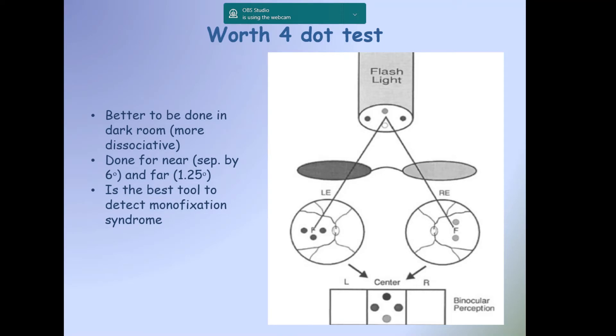Worth's four-dot test: A patient should wear red-green goggles, always red on the right eye and green on the left eye. The red filter should filter out all the colors except red, which will be perceived as two red circles. The green goggles should filter out all colors and perceive only three green circles. The circle of fusion is the lower white circle, which should be perceived as one. So the patient will normally perceive four circles if they have straight eyes, while if they have diplopia they should see five circles.